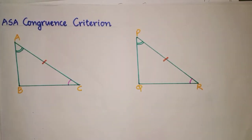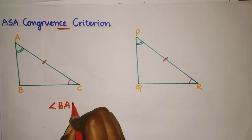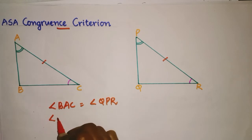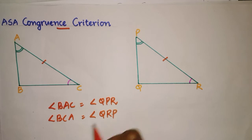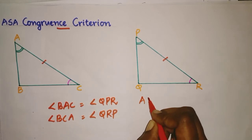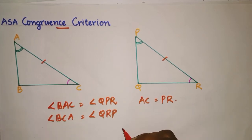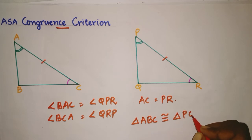In this congruence criterion, angle BAC equals angle QPR, angle BCA equals angle QRP, and also AC equals PR. Then we can say these two triangles are congruent, so triangle ABC is congruent to triangle PQR.